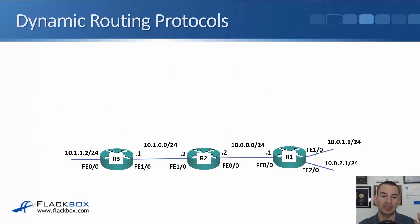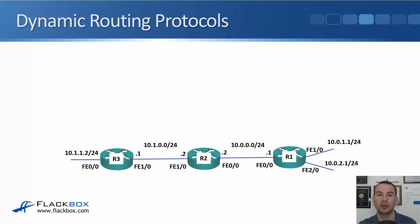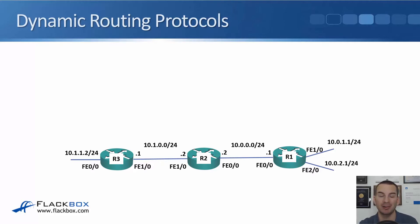Let's look at an example. I've got three routers: R1, R2, and R3. To the right of R1, I've got the 10.0.1.0/24 and the 10.0.2.0/24 networks. R2 and R3 are not directly connected to those networks, so they're going to need a way to find out about them. I could either use traditional static routing, which would require me as an administrator to configure static routes everywhere, or we can have them learn it automatically through the use of dynamic routing protocols.